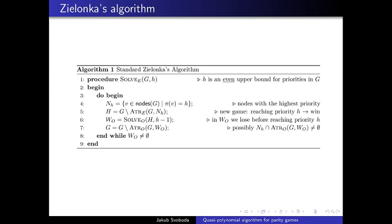Now let's jump to Paris's algorithm. To make Zielonka's algorithm better we first need to understand what it does. It takes a graph and erases every vertex that leads to a vertex with priority H, and in the resulting graph tries to find a winning set for odd. This is the winning set of vertices that can avoid a vertex with priority H completely. Then we compute its attractor.